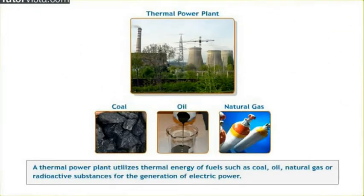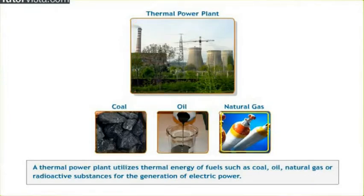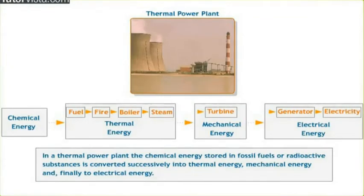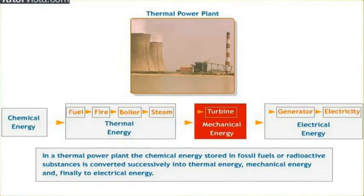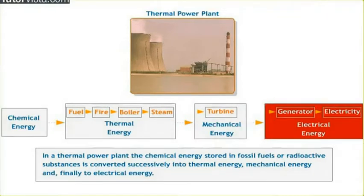A thermal power plant utilizes thermal energy of fuels such as coal, oil, natural gas or radioactive substances for the generation of electric power. In a thermal power plant, the chemical energy stored in fossil fuels or radioactive substances is converted successively into thermal energy, mechanical energy and finally to electrical energy.